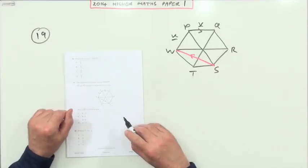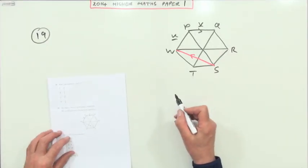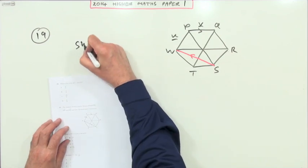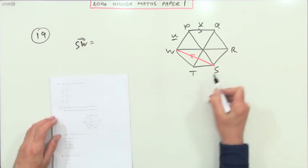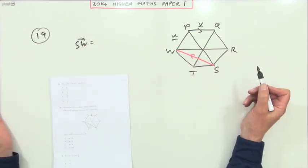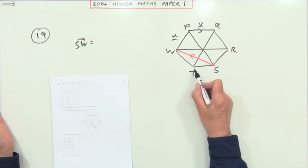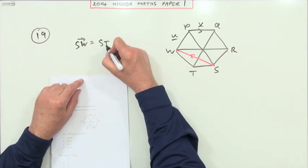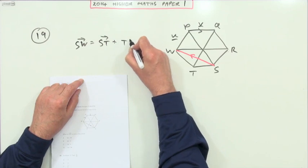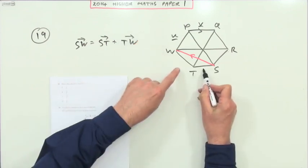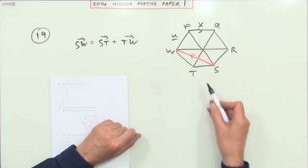Number 19, vectors pathways question. You would say what's SW? Well, SW simply means how else can you start at S and finish at W? The simplest way would be go to T and then go to W: ST plus TW. Now do you know any of those from the ones you've got? Yes.